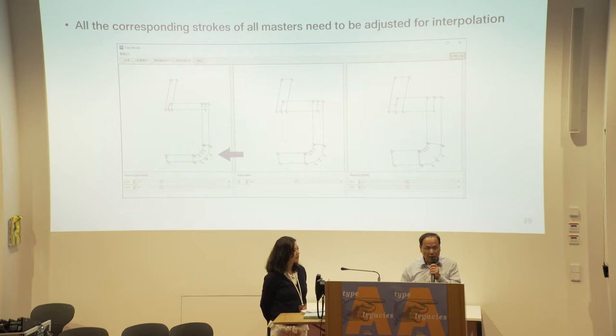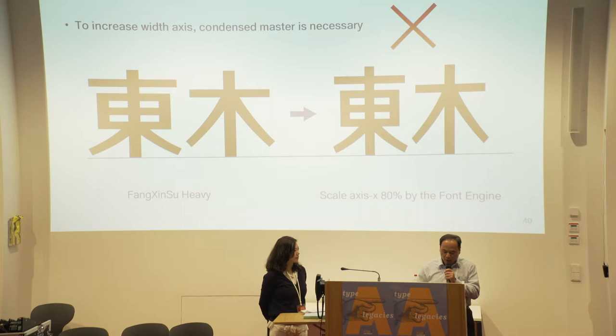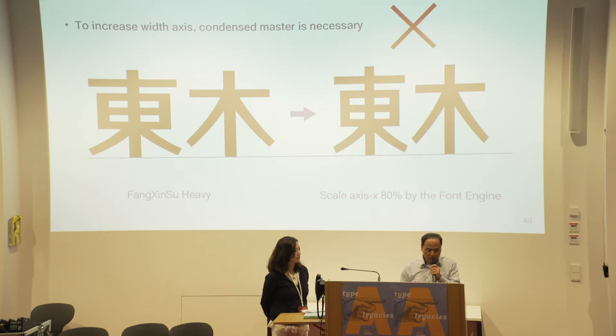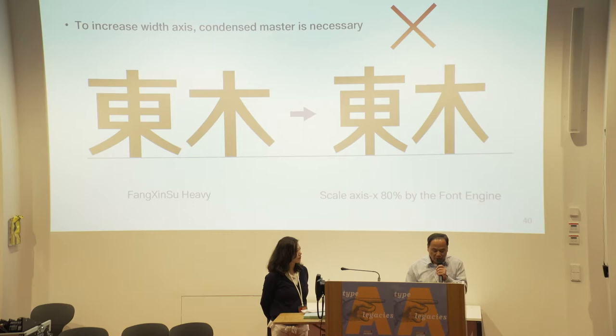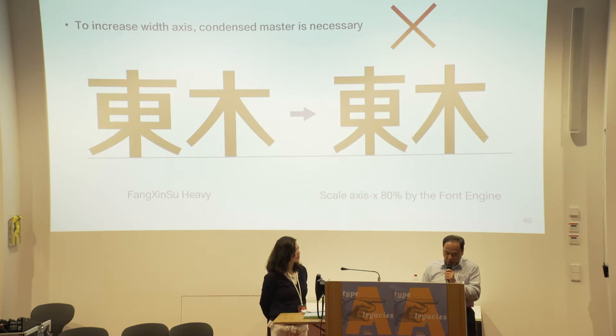770 strokes need to be adjusted this way to create a variable font. As mentioned, when developing the variable font we must add the width axis, so we need to redesign the condensed masters. The easiest way to create a condensed font is to reduce 20% of the width geometrically, but this causes vertical strokes to become too thin and horizontal strokes to look too thick — definitely not the design we want.